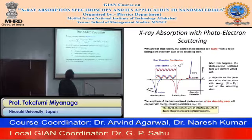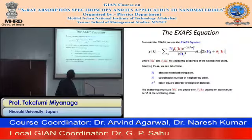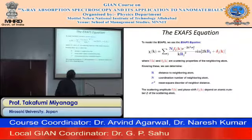The important EXAFS equation is: χ(k) = Σⱼ [Nⱼ · fⱼ(k) · ...]. There are two parts in this equation. The first part is related to N, the coordination number of the neighboring atom, and the second part is related to r, the distance of the neighboring atom. Sigma (σ) is defined as the mean square disorder of neighboring distance.